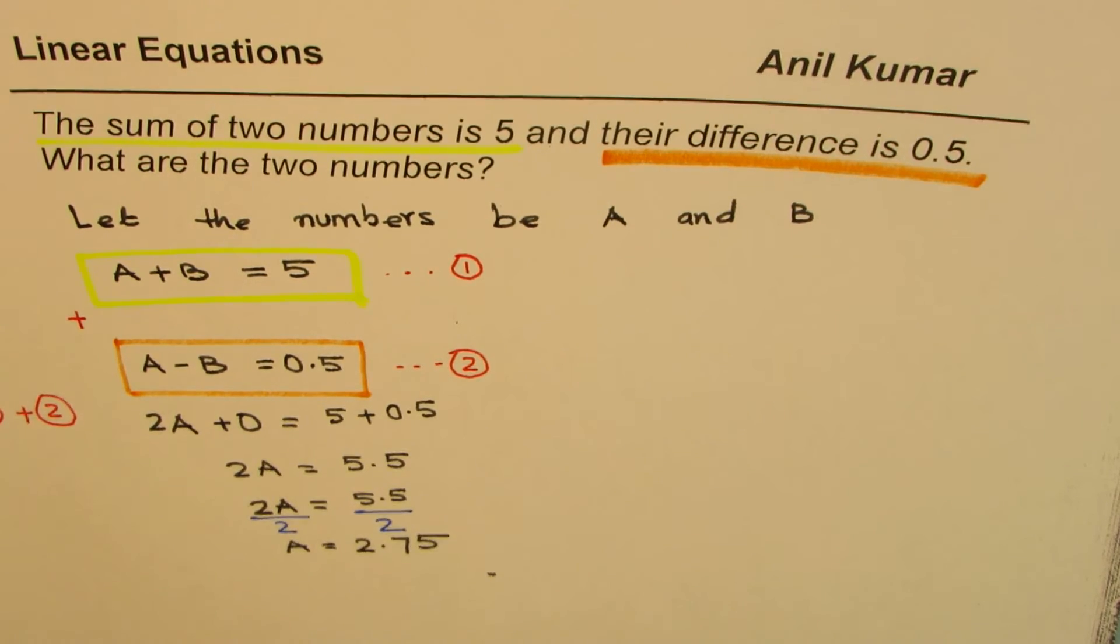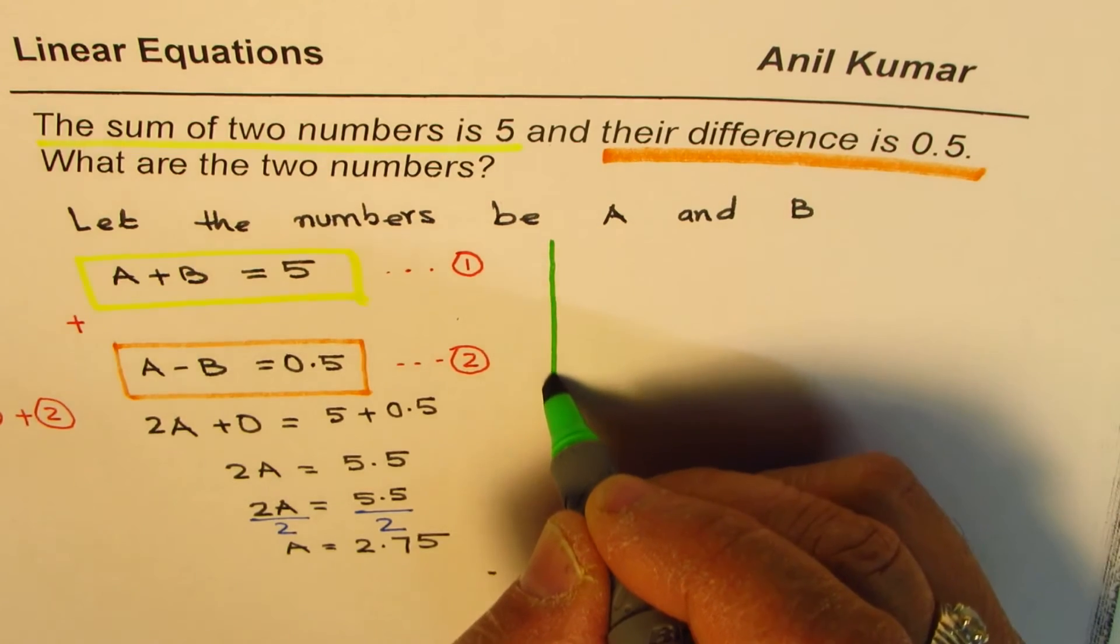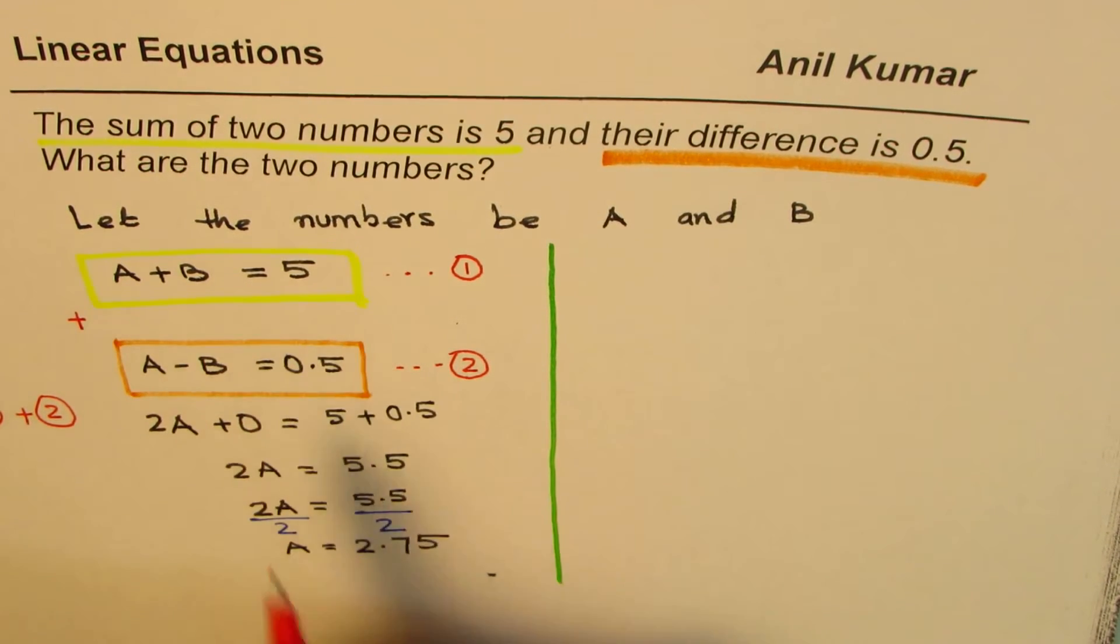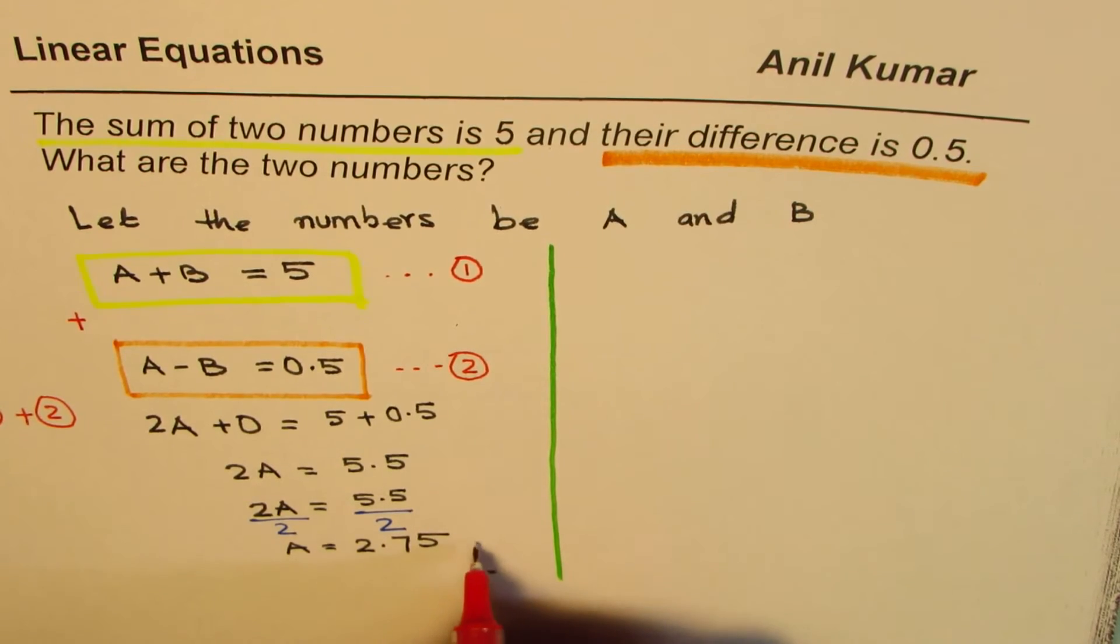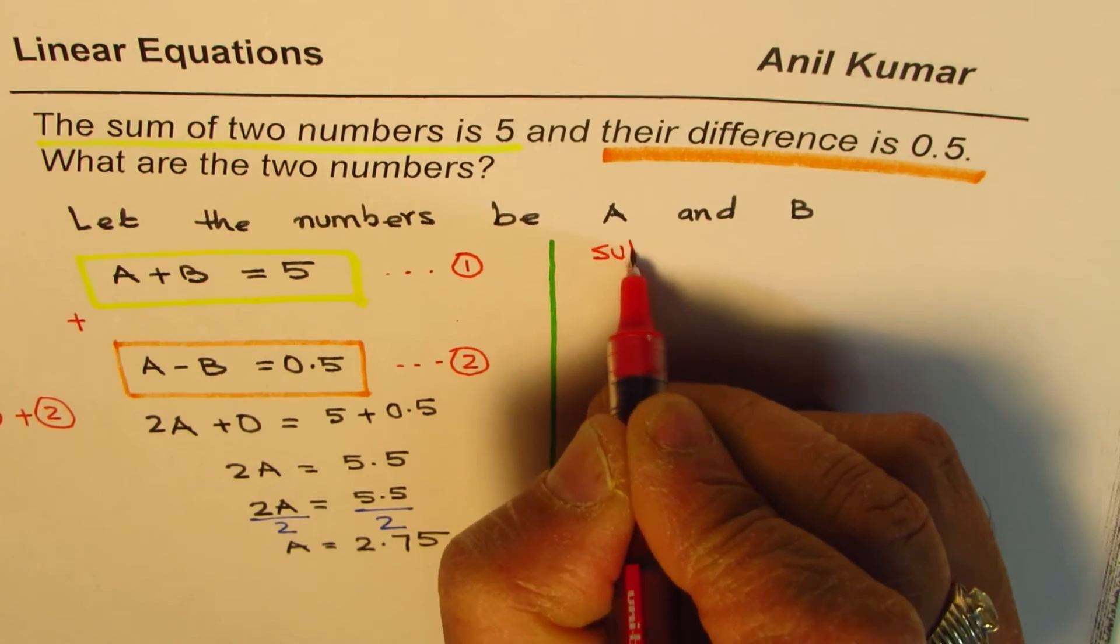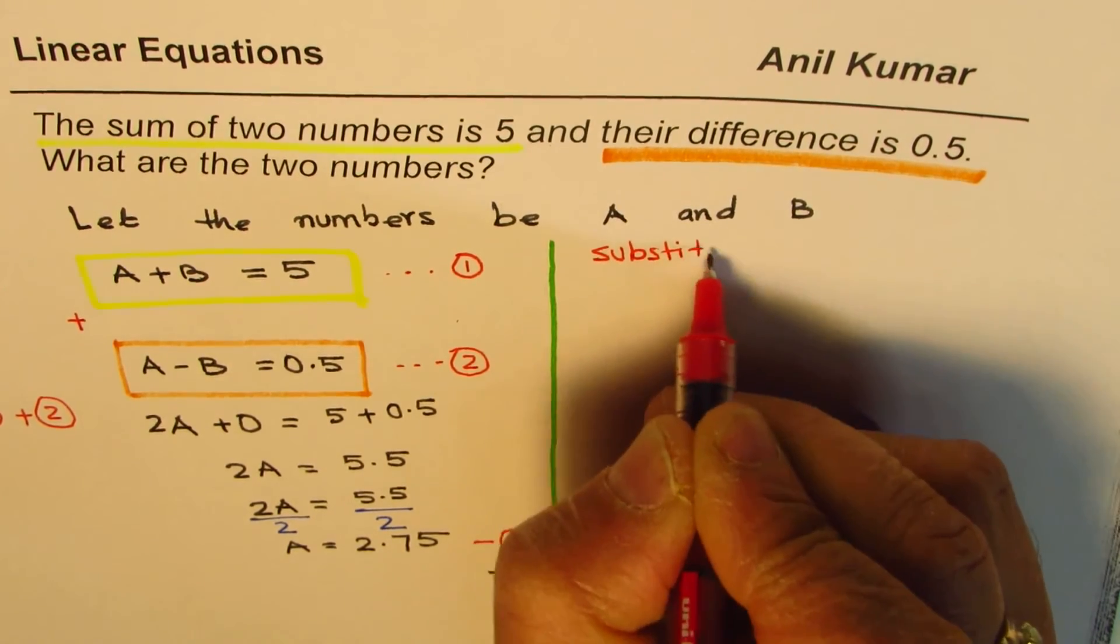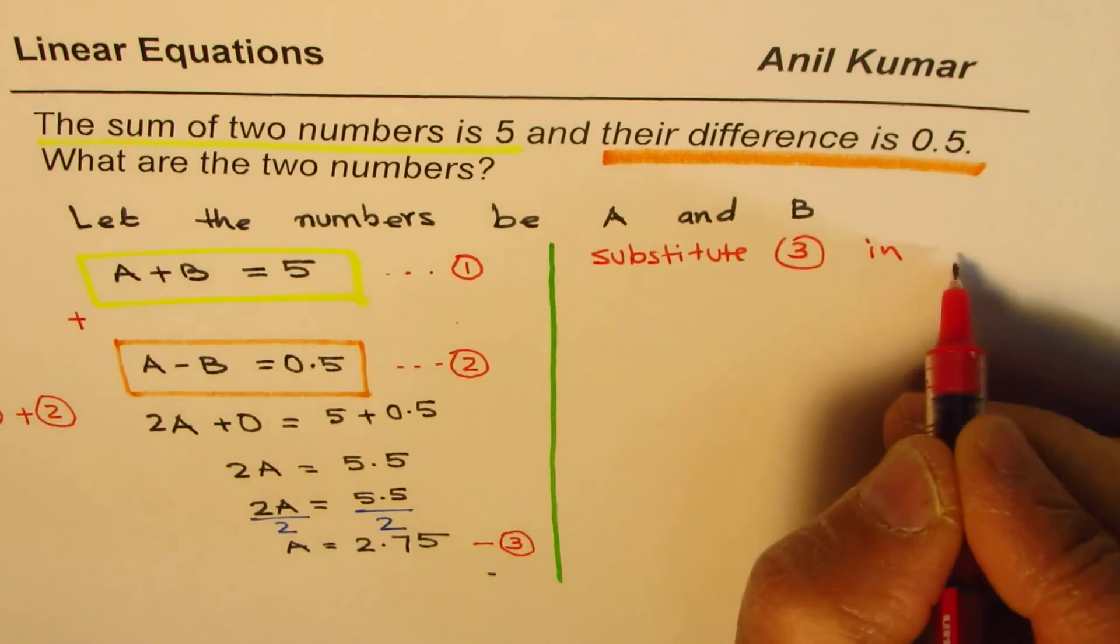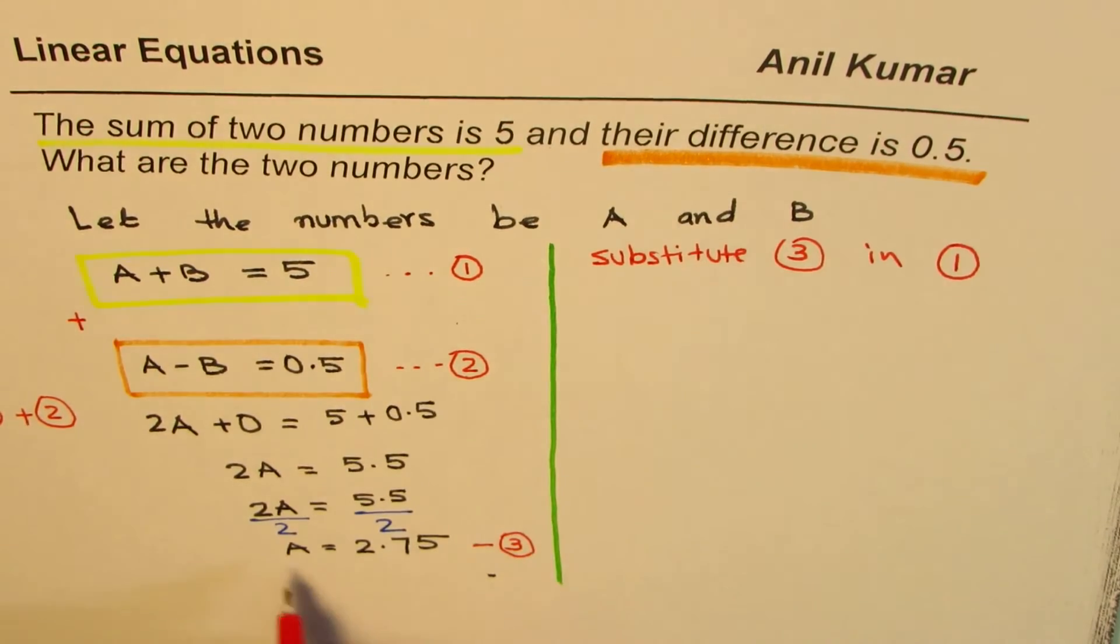Once you find one of these variables, you can find the other. So the method here is find one of them, then you can find the other. We can number this equation as 3. And then we say, substitute equation 3 in any one of your equations. We'll say, substitute in 1. So we know A is 2.75.